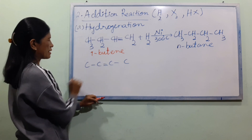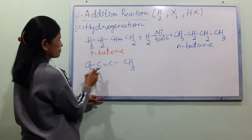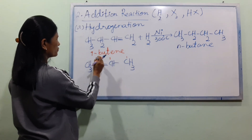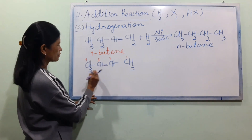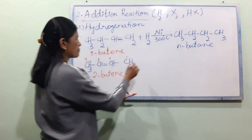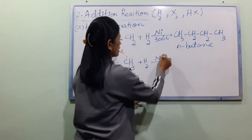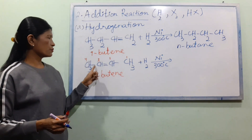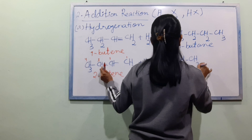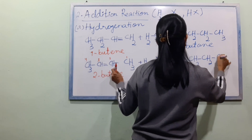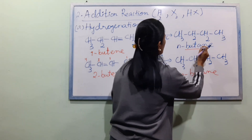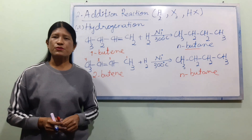The first example we use is C3. Here we have C3. So we use this technique for H2O. We use this technique at 300°C. So let's use this technique to produce H2O. For H2O, we use C3O. This is how we use hydrogenation. The last reaction is hydrogenation.